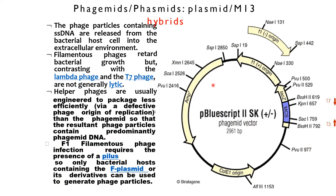The phage particles containing single stranded DNA are released from the bacterial host cell into the extracellular environment. The filamentous phage retard bacterial growth but, in contrast with the lambda phage and the T7 phage, are not generally lytic.